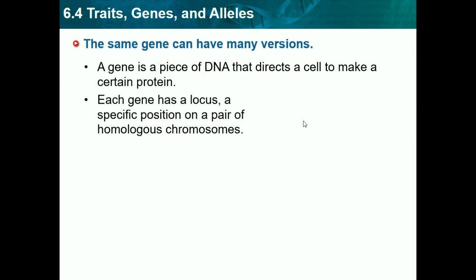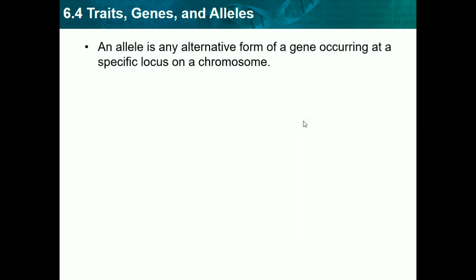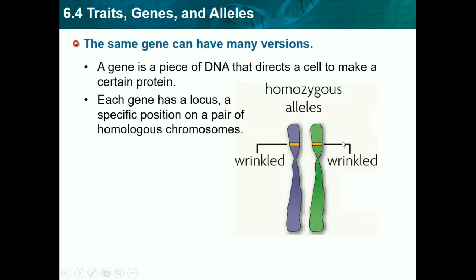Each gene has a locus, or a specific position, on a pair of homologous chromosomes. This is a picture of an allele on a chromosome — the blue and the green are a chromosome, and the little yellow strip in the middle is an allele for a wrinkled cell, basically. An allele is any alternative form of a gene occurring at a specific locus on a chromosome, so it's basically a gene on a specific area.